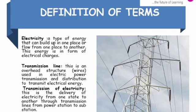Definition of terms. What is electricity? Energy that can build up in one place or flow from one place to another. This energy is in form of electrical charges.